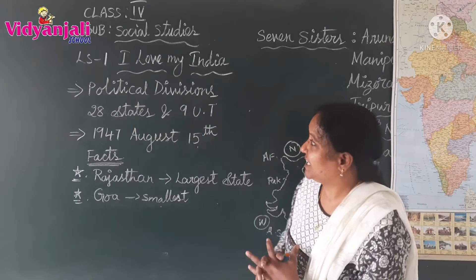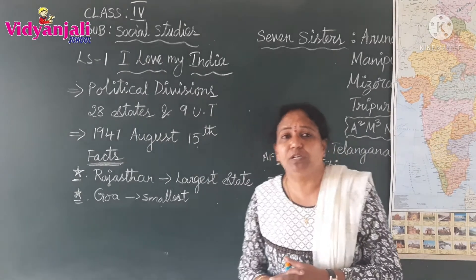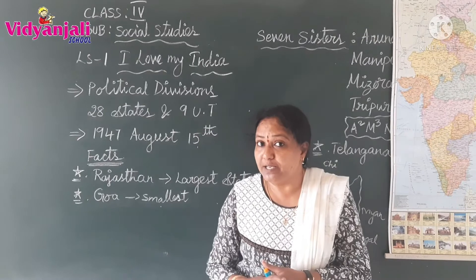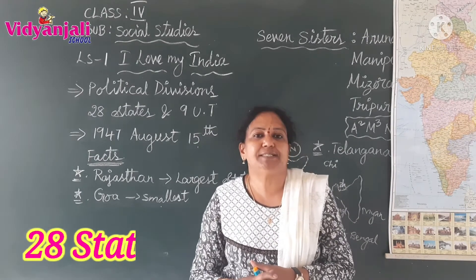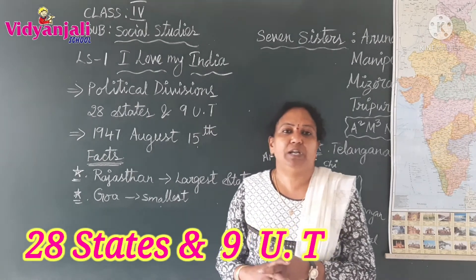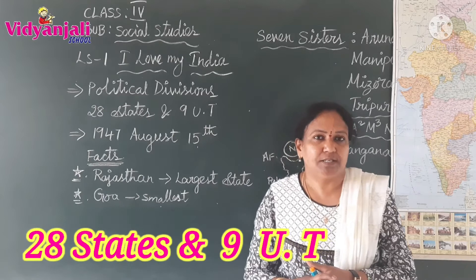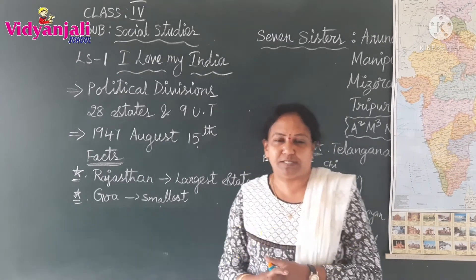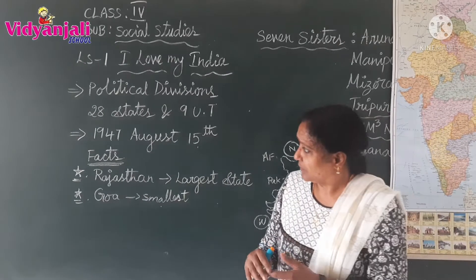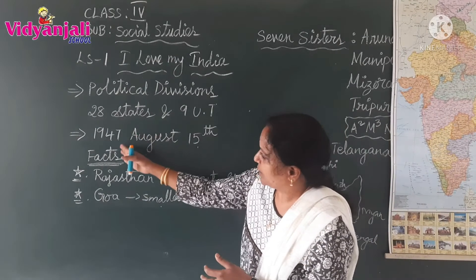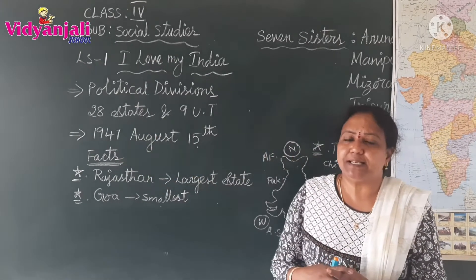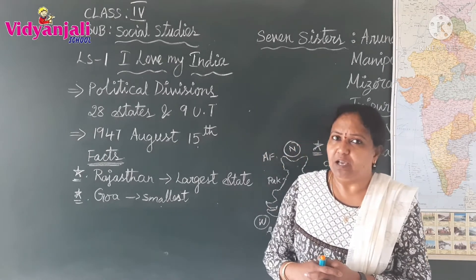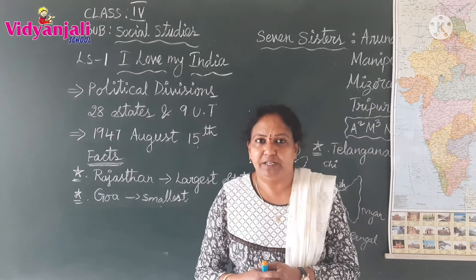Political divisions of India — we already know that in the third standard we learned India is divided into 28 states and 9 union territories. India became an independent country on August 15, 1947.